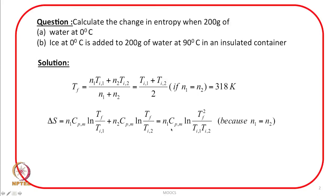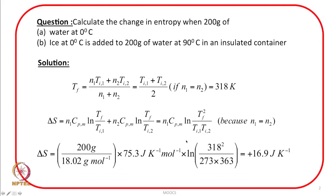With the number of moles, molar heat capacity, and temperatures known, we can calculate delta S. The heat capacity of water is 75.3 J/(K·mol). With Ti1 = 273 K, Ti2 = 363 K, and Tf = 318 K, the answer comes out to +16.9 joules per Kelvin.